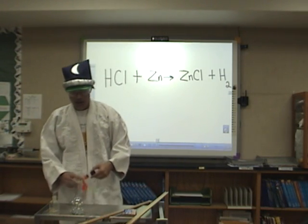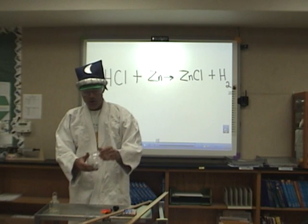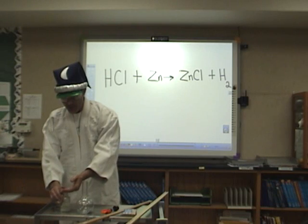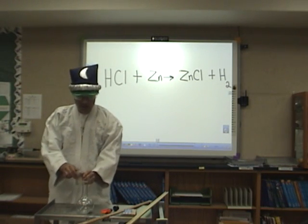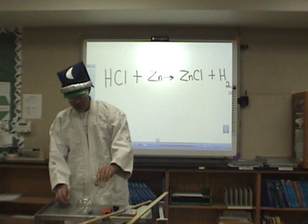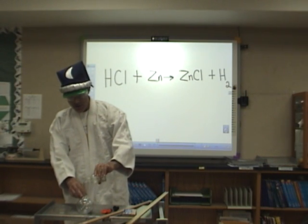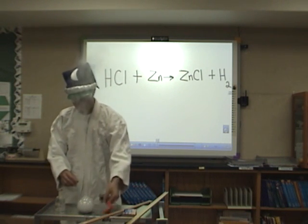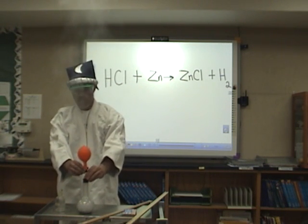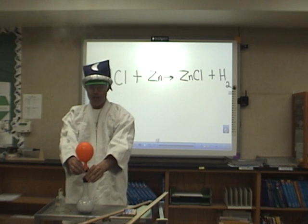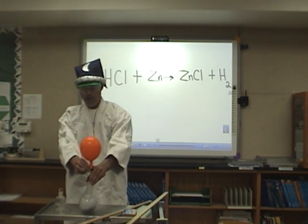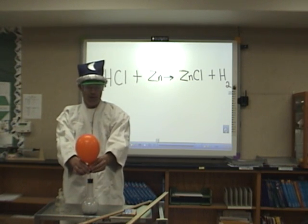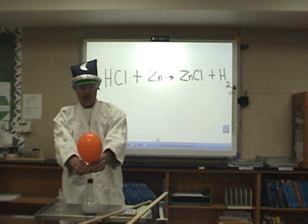We're going to collect some hydrogen gas, and to do that we already have in this Florence flask some zinc. Then we're going to add the hydrochloric acid by taking the glass stopper off the reagent bottle and pouring that into the zinc. The reaction begins running. We're collecting the gas inside the balloon. It's an exothermic reaction so it gets a lot warmer.